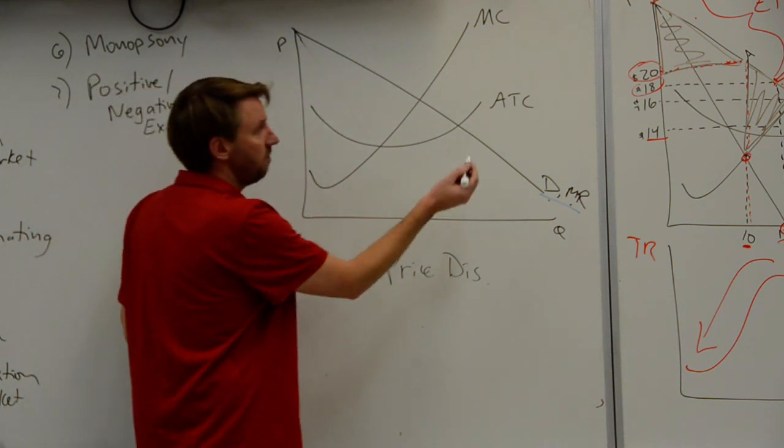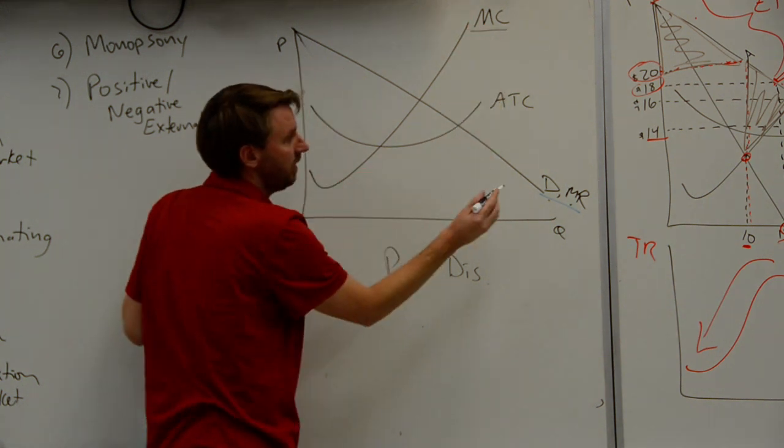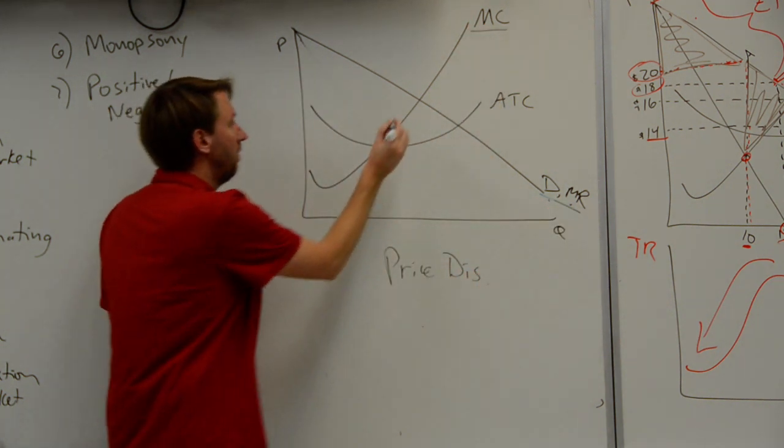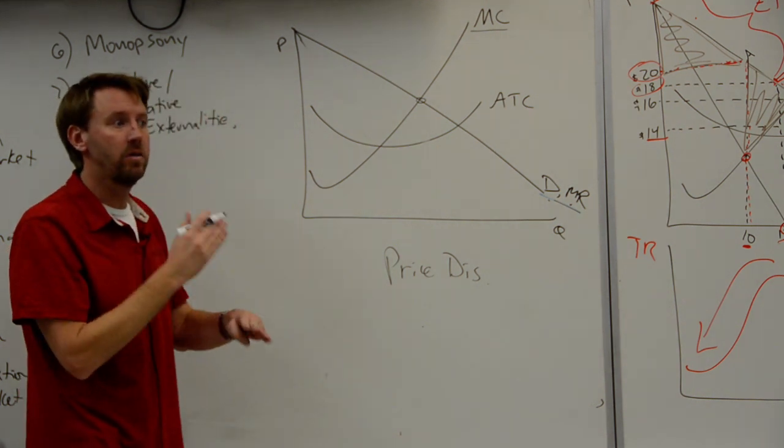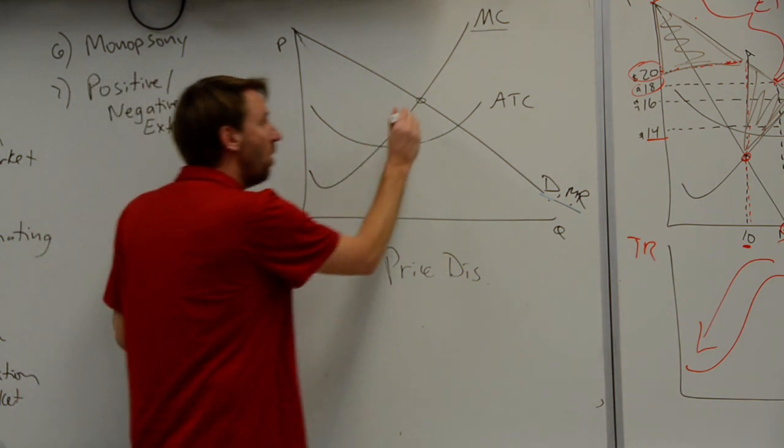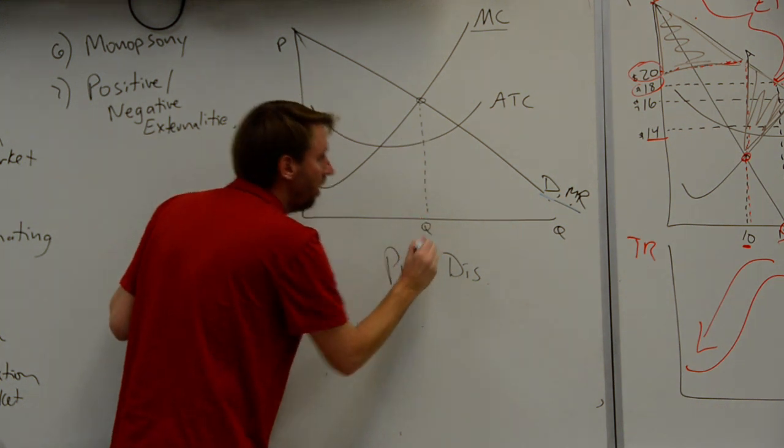Same formula. Find where MC crosses MR. Put a little circle around it. Get in that habit. Always find MR equals MC. Circle it. You know you're going to go down to output. It's a quantity.